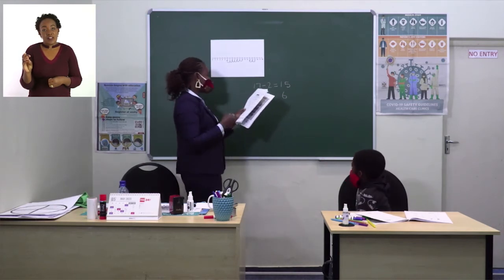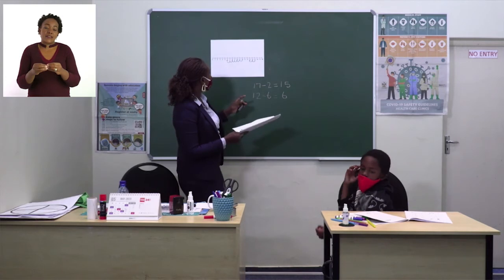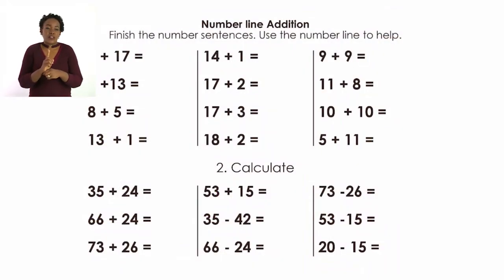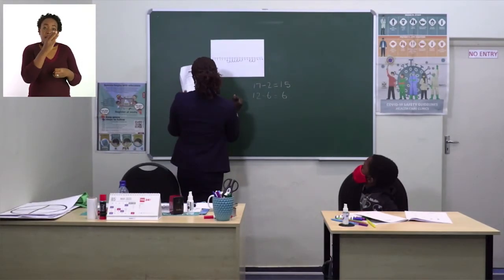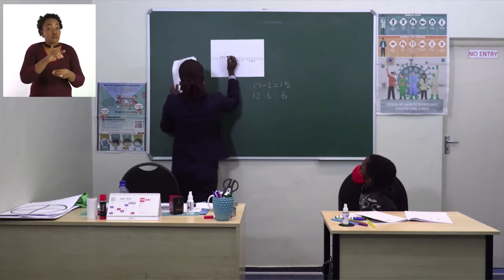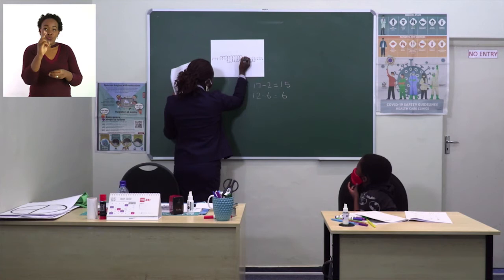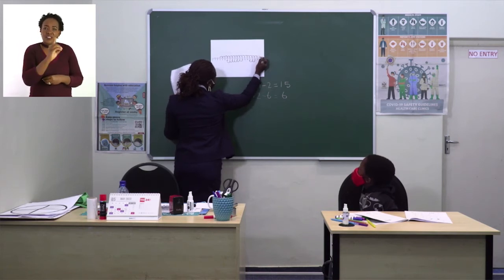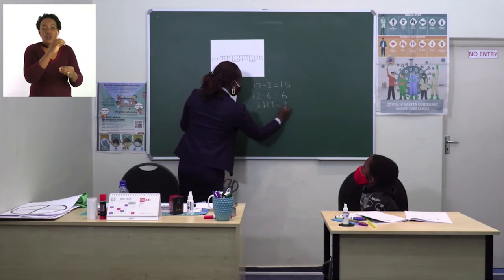We are now moving on to addition of numbers using the number line. Our first question is 3 plus 17. We count up 1 through 16 steps and 3 plus 17 equals 20.